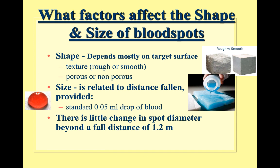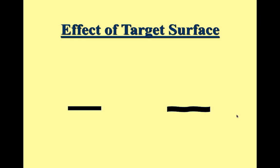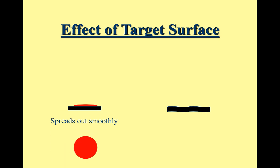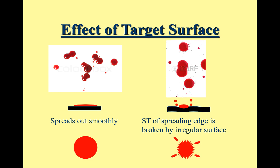Let me illustrate why texture matters so much. On a smooth target surface, the blood drop spreads out and the surface tension isn't disrupted, giving us a nice smooth round drop. If the target surface is rough, the surface tension as it spreads gets broken up by the irregular surface and we get what's called satellite spatter — little drops that break off — as well as spikes on the edges. So you can tell whether the surface was smooth or rough based on the shape of the blood spatter.